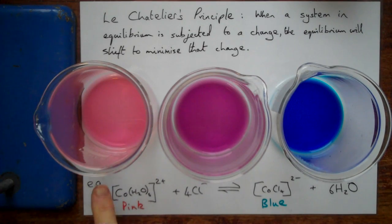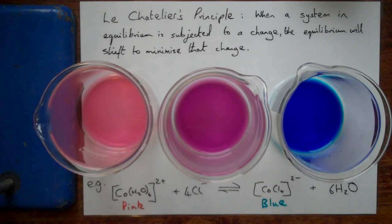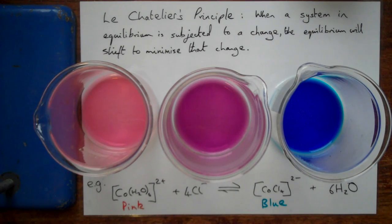On my left I've got cobalt chloride dissolved in water. Cobalt chloride in water produces a pink solution due to a cobalt ion which has six water molecules bonded to it. You don't need to know that formula at GCSE; at A2 you do, but that's another story. On the right-hand side we have a beaker full of cobalt chloride complex — it's a nice rich blue colour. In the middle, we've got an equilibrium of the two different chemicals mixed together, giving us a purple colour — some pink and some blue mixed together.